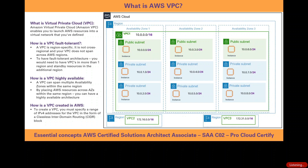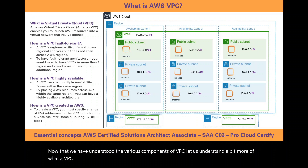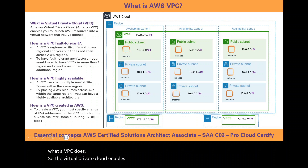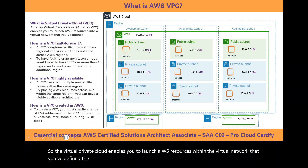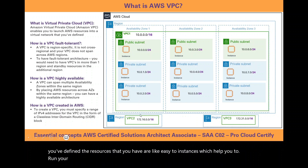Now that we have understood the various components of a VPC, let us understand more about what a VPC does. The Virtual Private Cloud enables you to launch AWS resources within the virtual network that you've defined. The resources, such as your EC2 instances, help you run your application and connect to other AWS services.